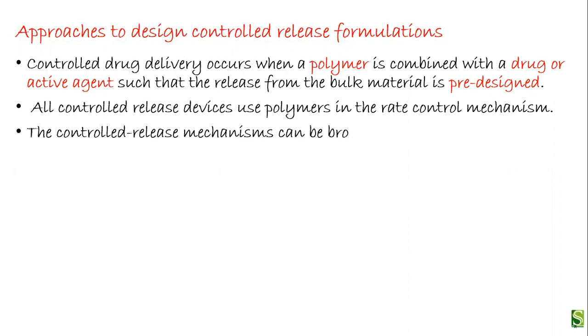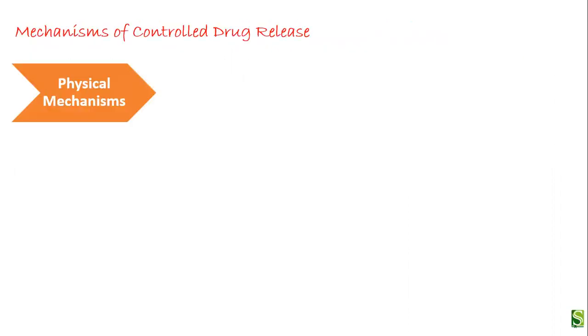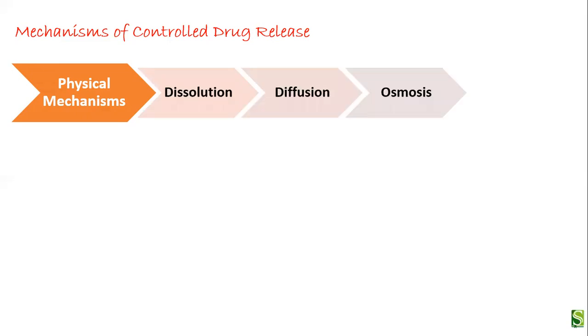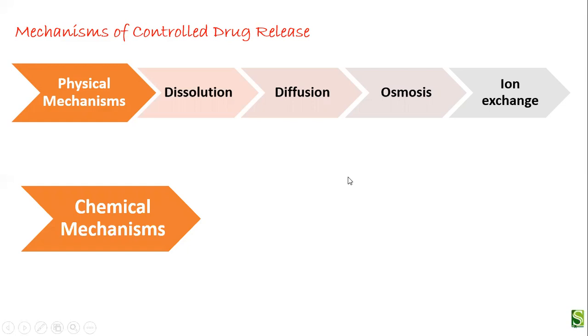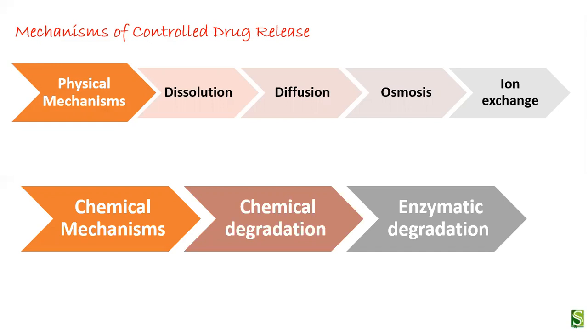The controlled release mechanisms can be broadly classified into physical and chemical mechanisms. The physical mechanisms include dissolution, diffusion, osmosis, and ion exchange. The chemical mechanisms include chemical degradation and enzymatic degradation.